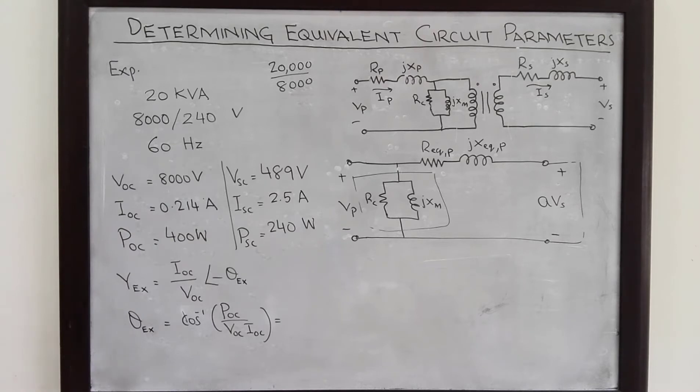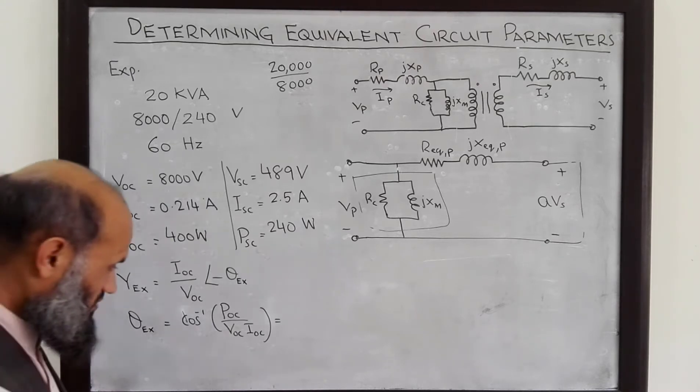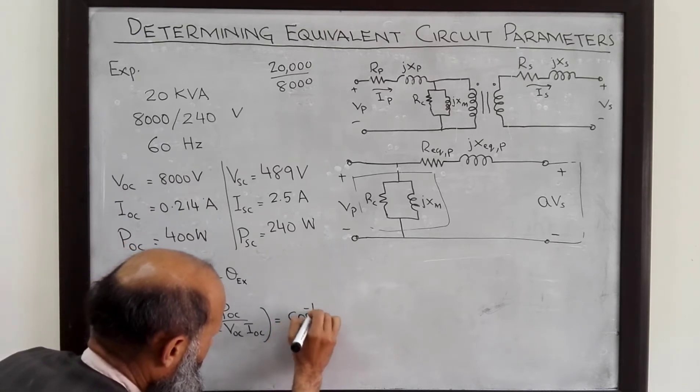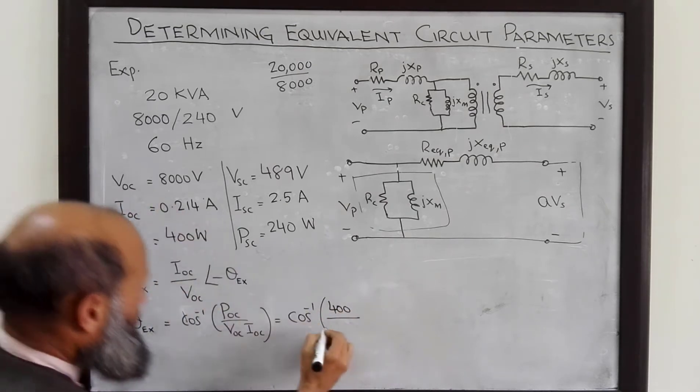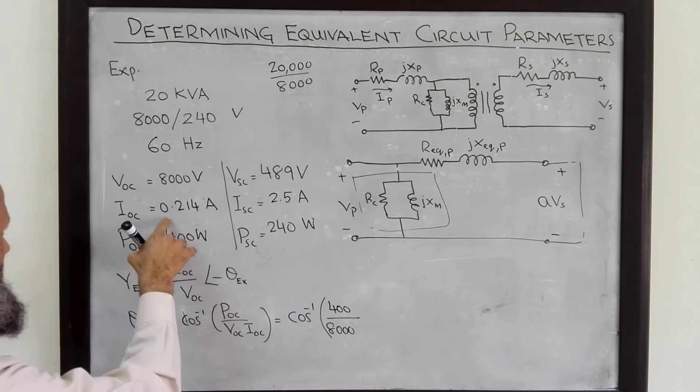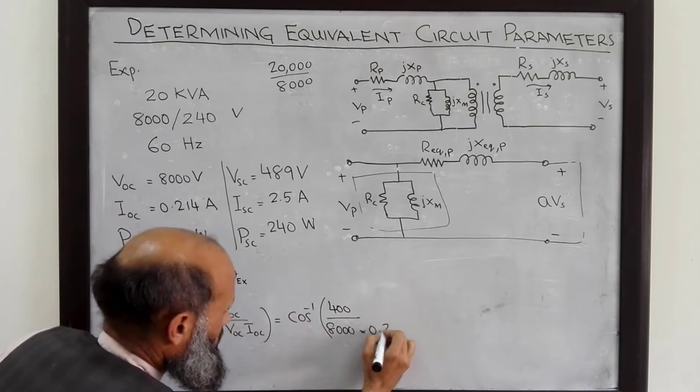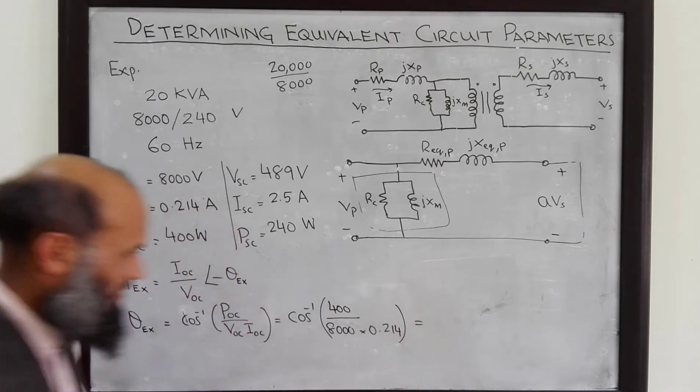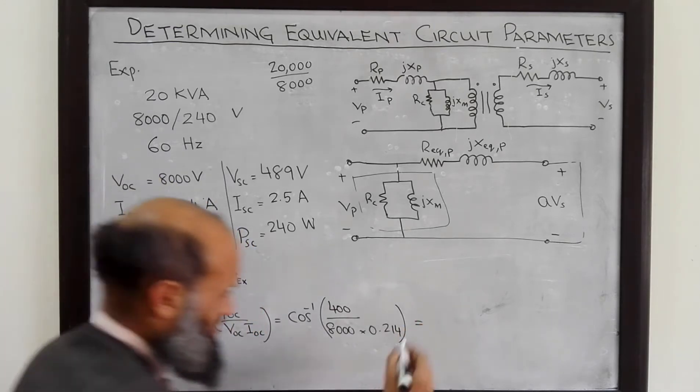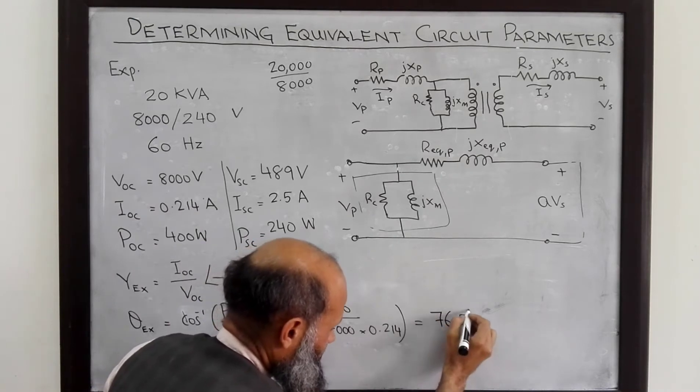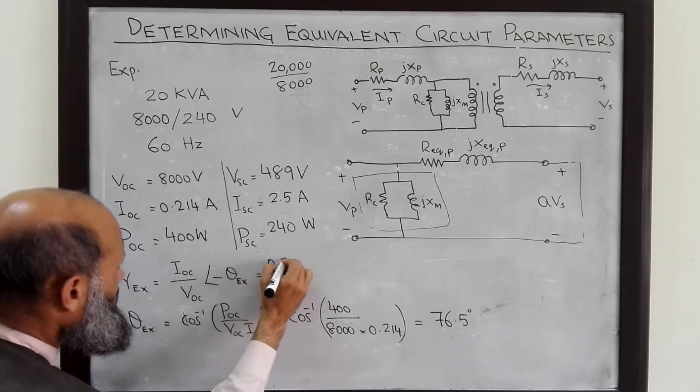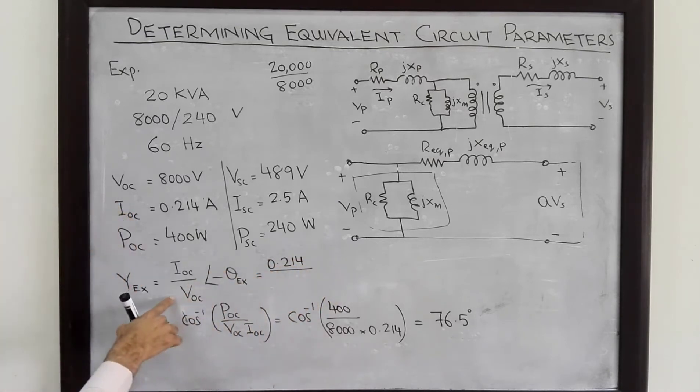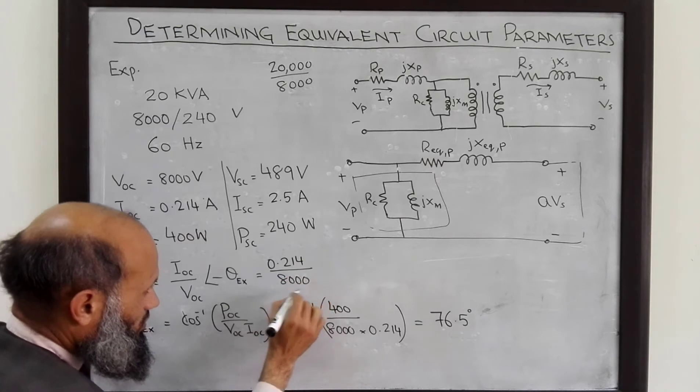So this angle you can determine, it comes out to be equal to 76.5 degrees. Cosine inverse of P open circuit is 400 watts, V open circuit is 8000 volts and I open circuit is 0.214 ampere and this angle comes out to be equal to 76.5 degrees.